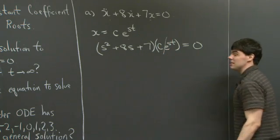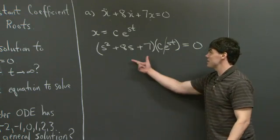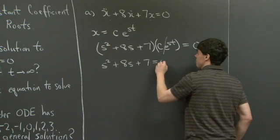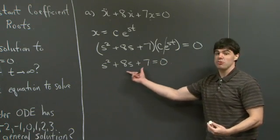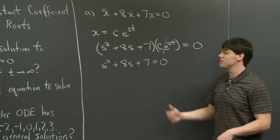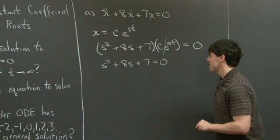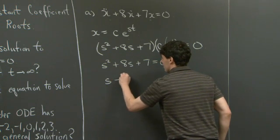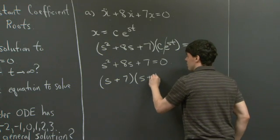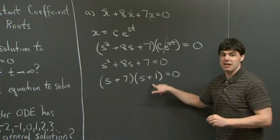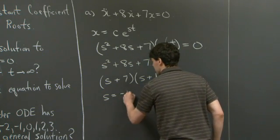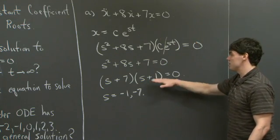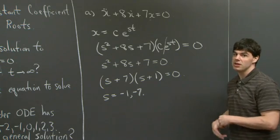Specifically, c·e^(st) can't be 0 for all time, so the only way this can hold is if s² + 8s + 7 = 0. So if we choose s to solve this polynomial, then x = c·e^(st) will be a solution for any constant c. The roots of this algebraic equation — we can factorize it — are negative 7 and negative 1. Notice how this whole process has turned a differential equation into a simpler algebraic equation, so if we can solve the algebraic equation, we can solve the differential equation.